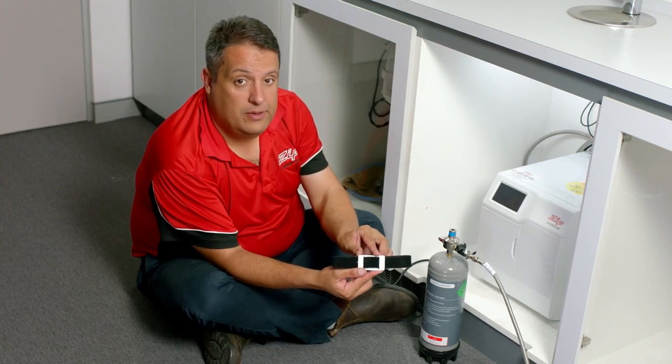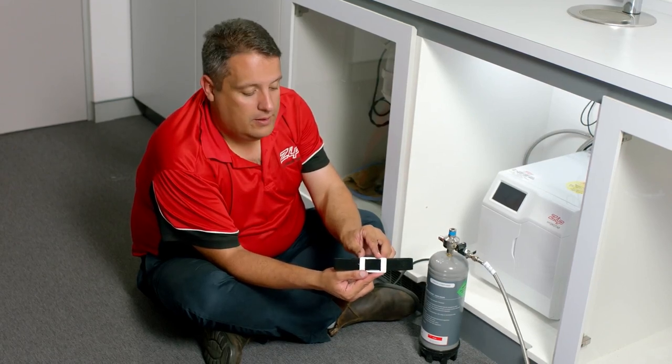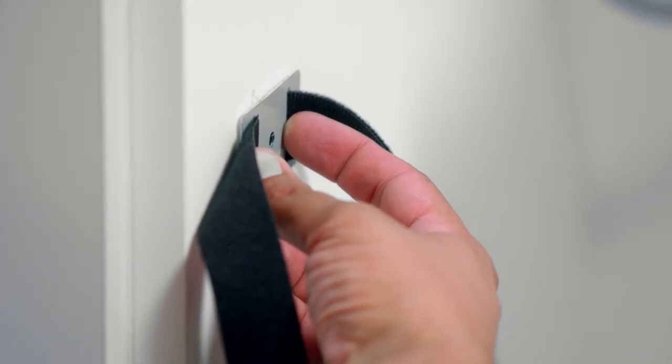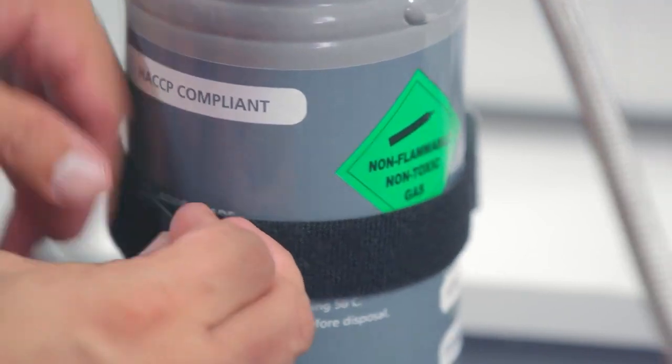A CO2 bottle strap is supplied with the unit. This needs to be mounted to the side of your cupboard so that when you fit your CO2 bottle, it will be held steadfast in the upright position.